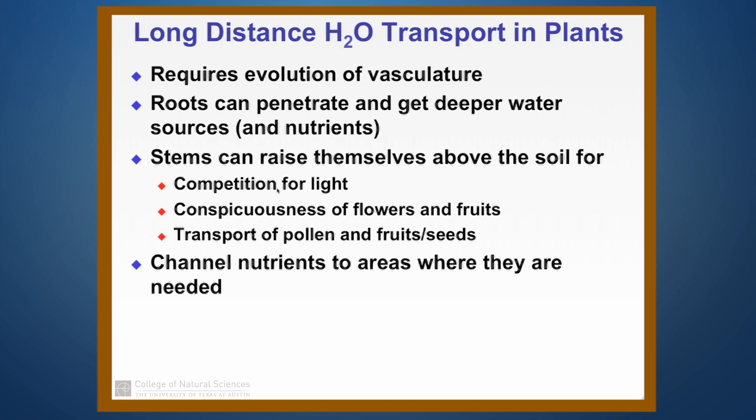The other advantage of vasculature is it allows the plant to move nutrients to areas where they are needed. For example, the plant might produce a new leaf and that new leaf may not be self-sufficient yet, but with vasculature it can move some of its photosynthates — some sugars, for example — out of a more mature leaf into the developing leaf, and that will increase the rate at which that new leaf can develop.